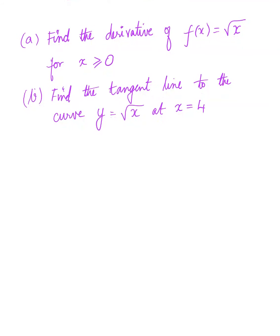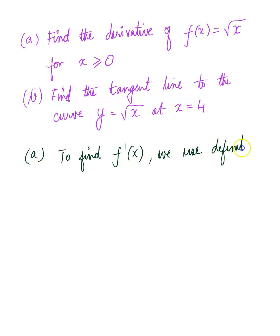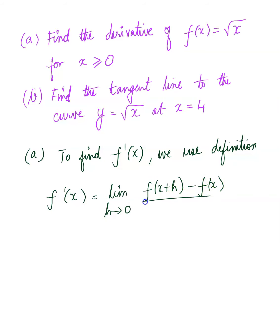Here is our next problem. We have two parts. Part A says to find the derivative of f of x, which is equal to square root of x, for x greater than or equal to 0. Part B says find the tangent line to the curve y equals square root of x at x equals 4. Let's focus on part A. Part A wants us to find the derivative, so from the language, I need to find f prime of x. To find f prime of x, we use the definition: f prime of x equals limit h approaches 0, all over h.